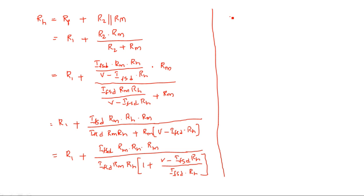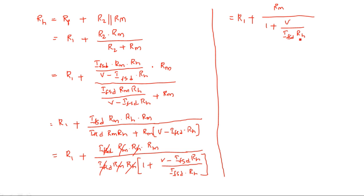Now, that is equal to R1 plus — what happens here? IFSD times RM times RH and IFSD times RM times RH cancel, and we are left with RM times RM divided by IFSD times RH minus IFSD times RH by IFSD times RH minus 1. So we have R1 plus IFSD times RM times RM divided by V.